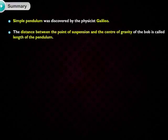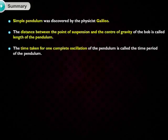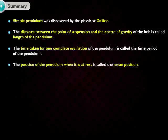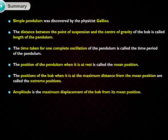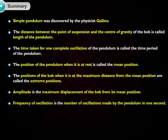The simple pendulum was discovered by physicist Galileo. The distance between the point of suspension and the center of gravity of the bob is called the length of the pendulum. The time taken for one complete oscillation is called the time period. The position of the pendulum when it is at rest is called the mean position. The positions of the bob at maximum distance from the mean position are called the extreme positions. Amplitude is the maximum displacement of the bob from its mean position. Frequency of oscillation is the number of oscillations made by the pendulum in one second.